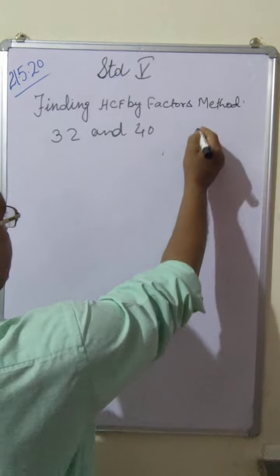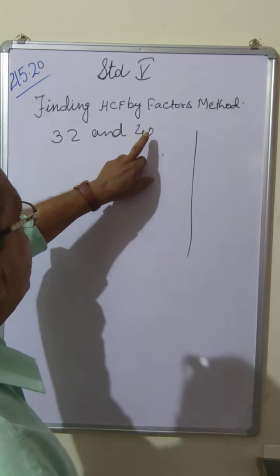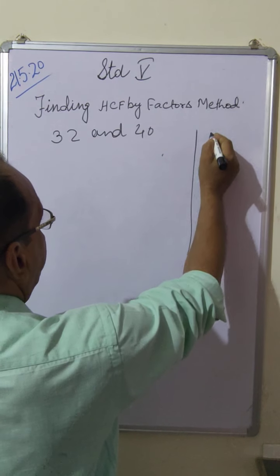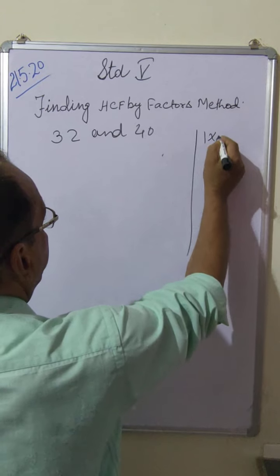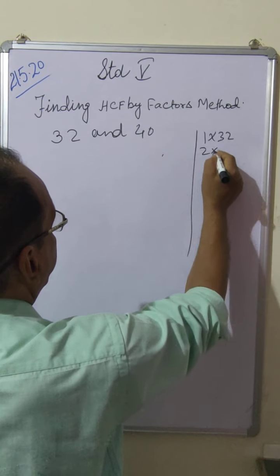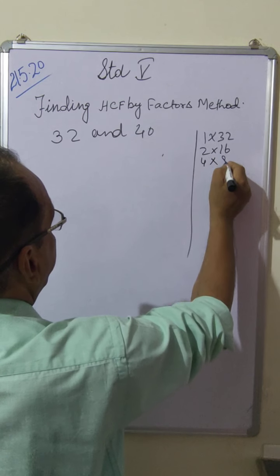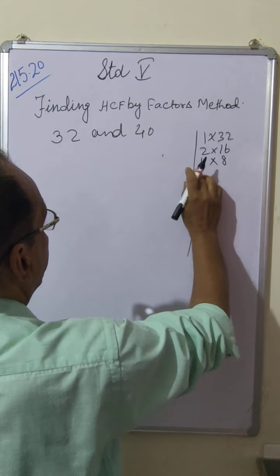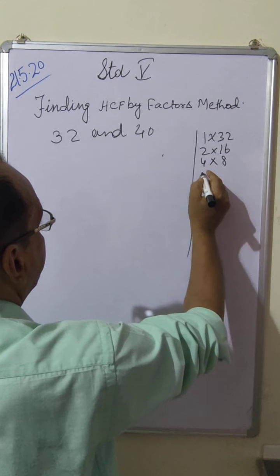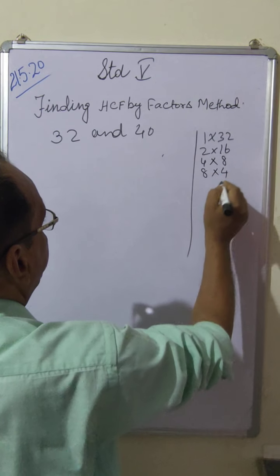So how will you find it? First of all you have to find all the factors of 32 and 40. For 32, start here: 1 into 32, then even number 2 into 16, 4 into 8, not divisible by 5, not divisible by 6, not divisible by 7, then 8 into 4.